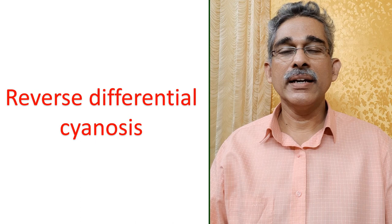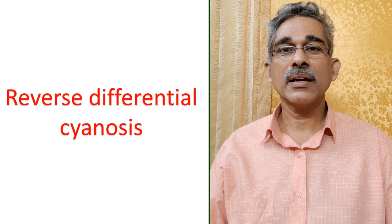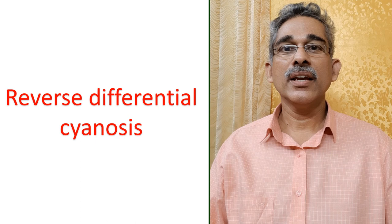The desaturated blood from the right ventricle is pumped into the aorta and reaches the upper limbs. Saturated blood coming from the lungs into the left ventricle is pumped into the pulmonary artery and across the ductus arteriosus into the lower limbs, so that lower limbs get saturated blood and upper limbs get desaturated blood.